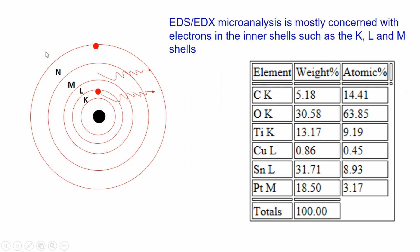When we bombard electrons from the SEM machine on the specimen, it will knock out the innermost electron. When it knocks out that electron, there will be a vacancy, and the other electron living above it will try to fill that vacancy. Because of the difference in energies between these two electrons, energy will be emitted — we call this X-ray, specifically characteristic X-ray, because we want to know the characteristics of the material.